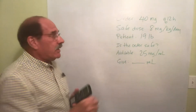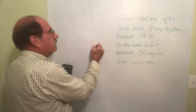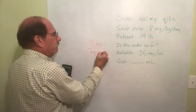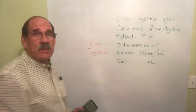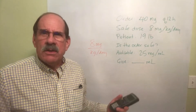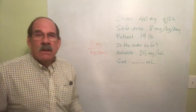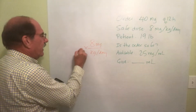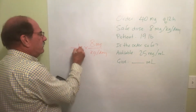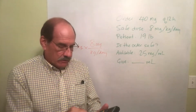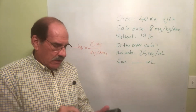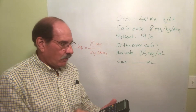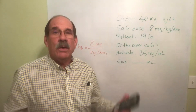So the safe amount is 8 milligrams per kilogram per day. We're doing the same thing over and over, just for a different reason from the past two weeks. We now multiply by the weight in kilograms. So we take 19 pounds — 19 divided by 2.2 — so the patient weighs 8.6364 kilograms.